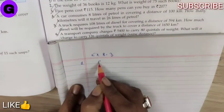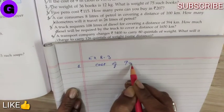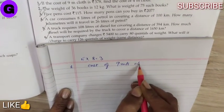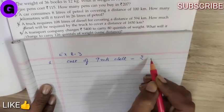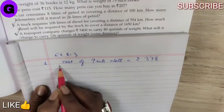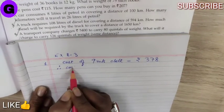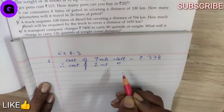So the statement will be, cost of 9 meters cloth is equal to rupees 378. Therefore, cost of 1 meter cloth.